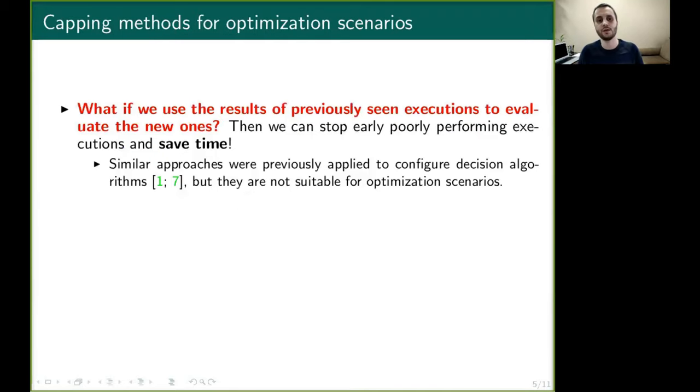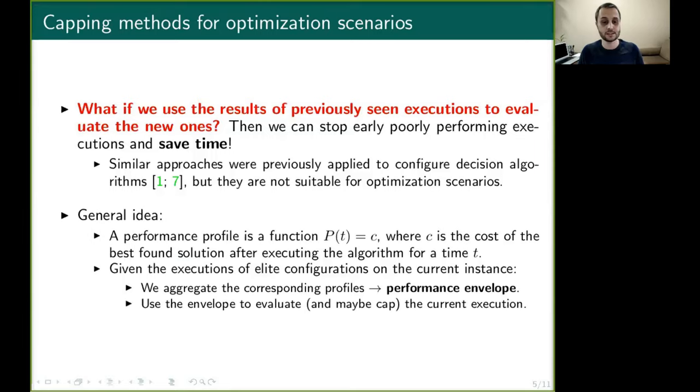So trying to solve this problem, we propose to use the performance of previous executions to evaluate the new ones and then stop early poor performers. To do this, we compute the performance profile of each execution, which is a function that gives the cost of the best found solution for a given running time. Then we aggregate all these profiles into the performance envelope, which is used to evaluate new executions.